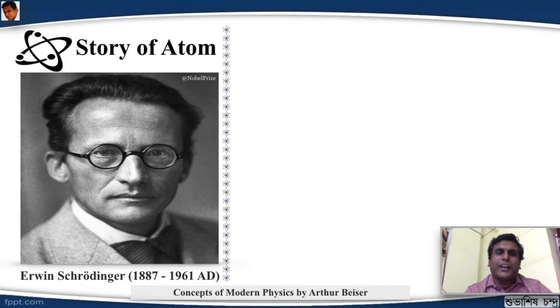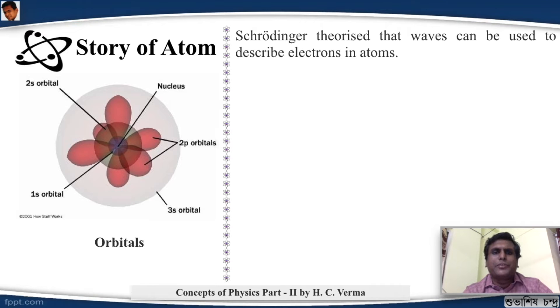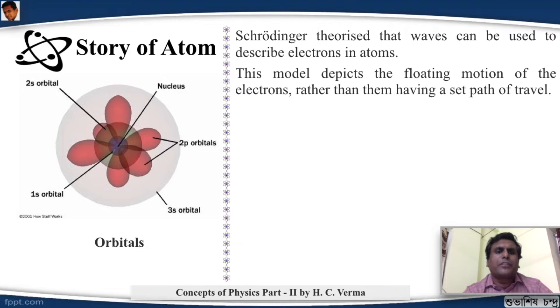Next guy is this guy, Erwin Schrödinger. He was an Austrian physicist and is popularly known for his Schrödinger cat thought experiment. Well, we are not going to look into the Schrödinger cat thought experiment, but you might look into it. It's a very interesting thought experiment. We will look what he did for the wave theory or the atomic theory. Sorry, he is so famous with his wave theory that it just slipped out of my mouth. Schrödinger theorized that waves can be used to describe electrons in atoms. This model depicts the floating motion of the electrons rather than them having a set path of travel. So Bohr's orbits were fixed. He said that they will have a floating motion.